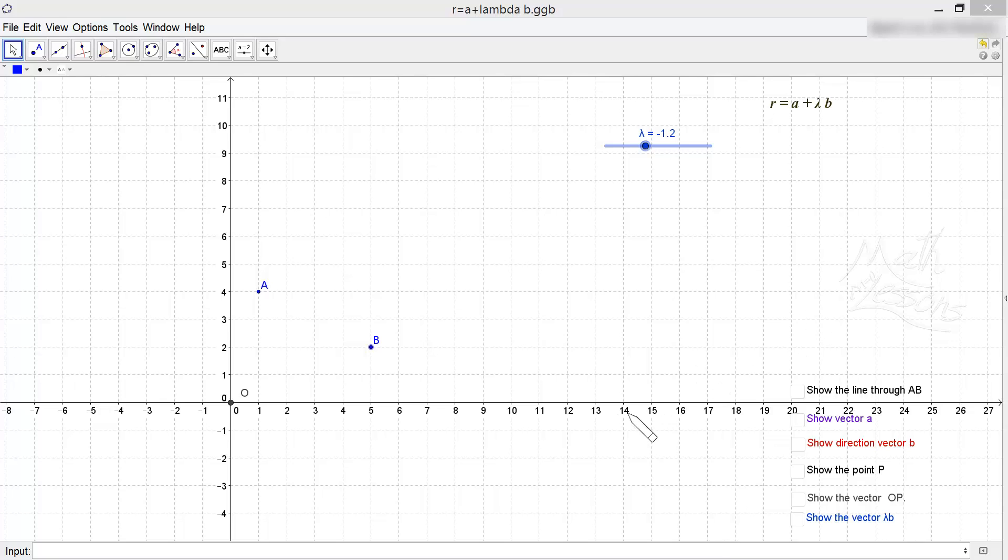This is a short video to look at the equation of a straight line using vector or parametric form. We've got two points A and B, and that's the minimum amount of information you need to define a line - two points.